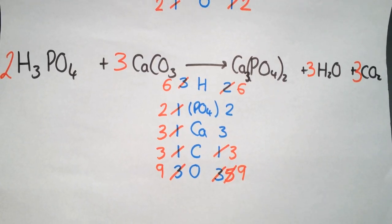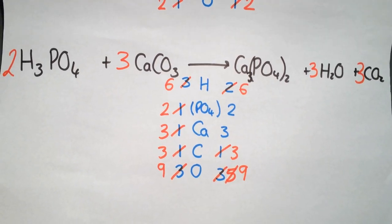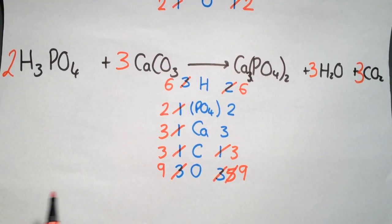So it's a slightly more in-depth example where you have to multiply a few more species, but it follows the same procedures.